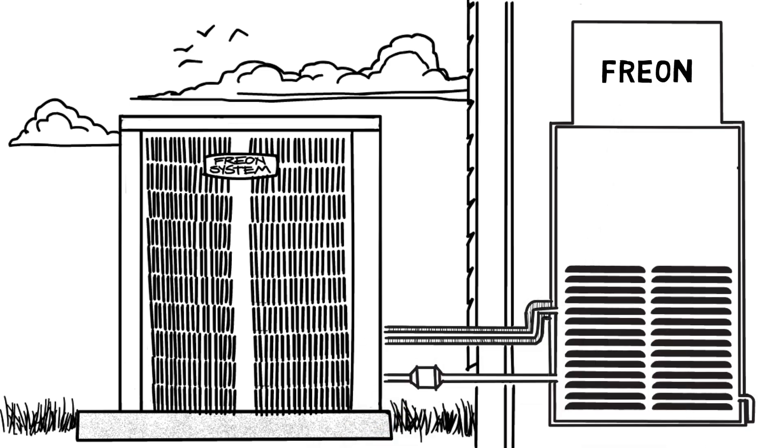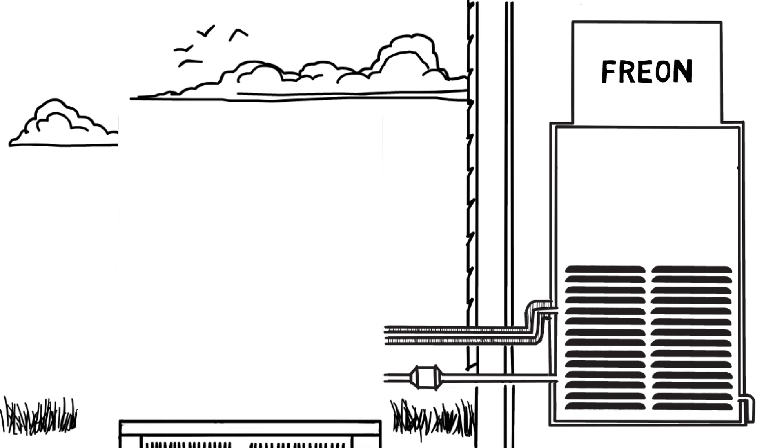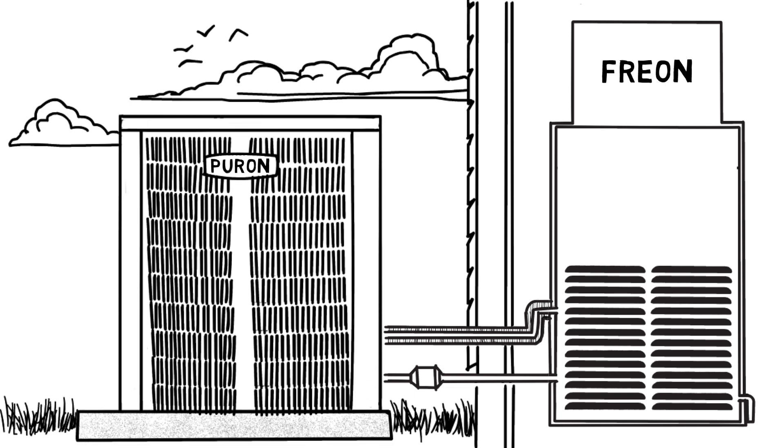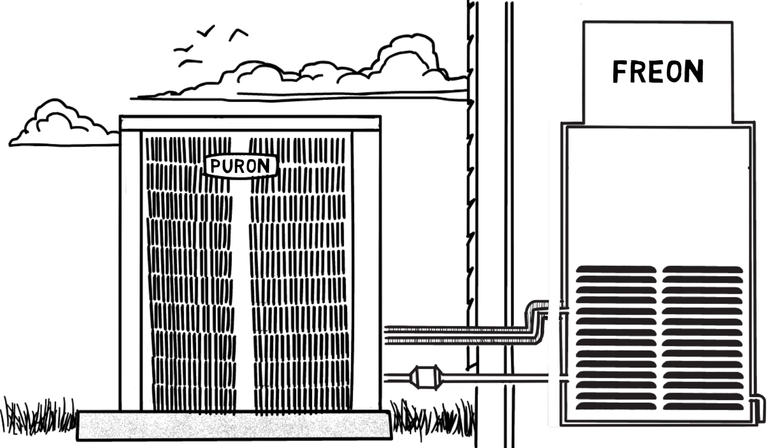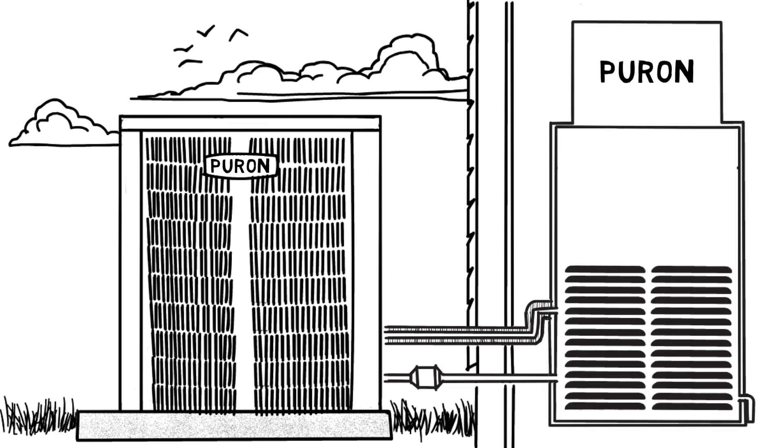Let's say a common part in the condenser, like the coil, fails and needs to be replaced. This item may not be available for Freon units, so the entire condenser has to be replaced with a Puron one. This presents a problem. Now, the other half of the air conditioning system, the air handler, will need to be replaced with matching Puron components to be compatible.